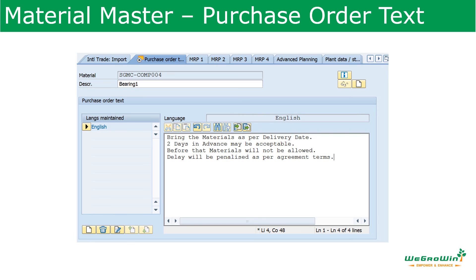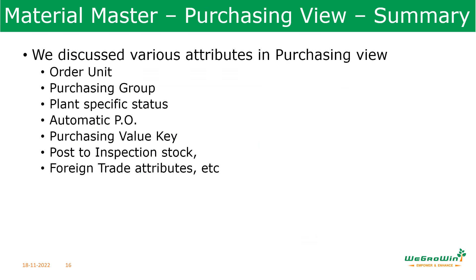Purchase order text is a text describing the material in more detail. This text is subsequently copied to purchasing documents like purchase requisitions or purchase orders automatically, where it can be changed if necessary. It is valid for all organization levels — not for specific details. In this session, we discussed various attributes related to purchasing view: order unit, purchasing group, plant specific status, automatic purchase order, purchase value key, post to inspection stock, foreign trade details, and many other fields.